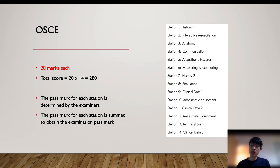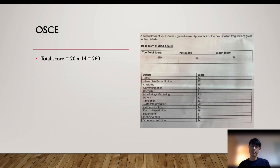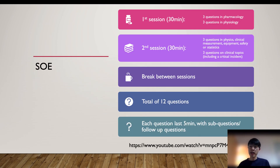Each OSCE station carries 20 marks; 14 stations give a total of 280. The pass mark for each station is determined by the examiner board, and the overall pass mark is the sum of all station pass marks. The OSCE passing rate varies between 50% and 70%, and about 10–20% of candidates pass only one of the two components. Candidates retaking the SOE or OSCE on a second attempt usually have a higher passing rate. You will receive a breakdown score for each station after the exam.